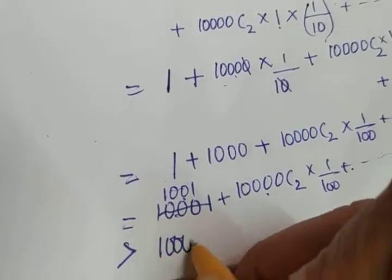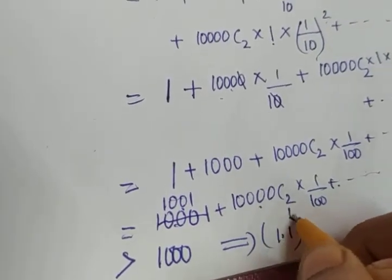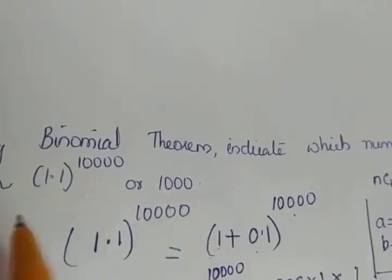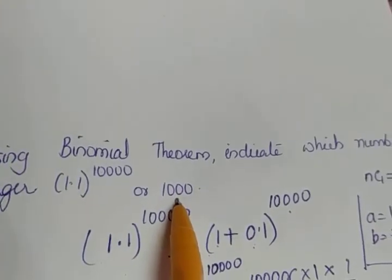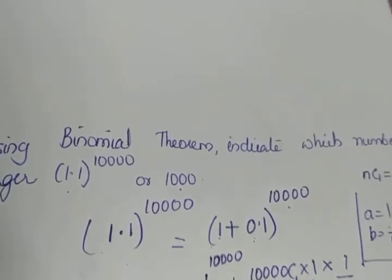So what we can conclude: that implies 1.1 raised to 10,000 is greater than 1000. So the question was to find which number is larger, so which number is larger: 1.1 raised to 10,000 is larger than 1000.